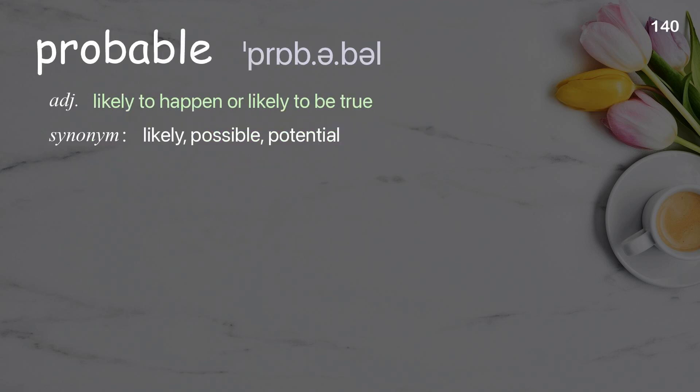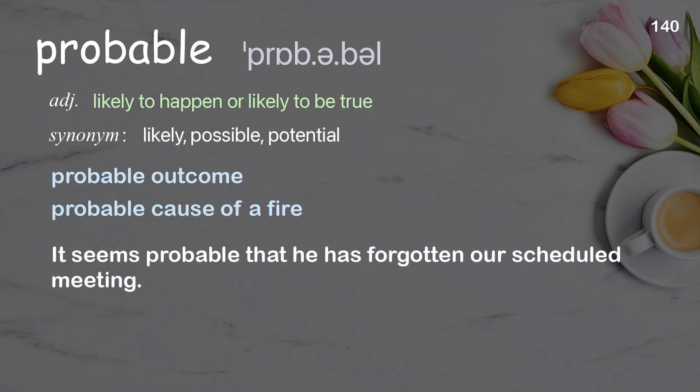Probable: likely to happen or likely to be true. Examples: probable outcome; probable cause of a fire. It seems probable that he has forgotten our scheduled meeting.